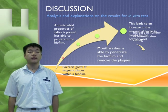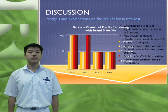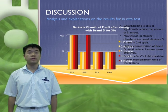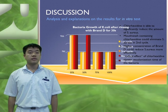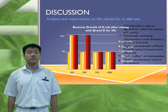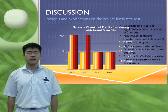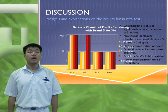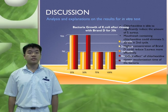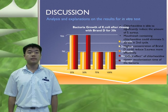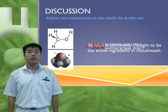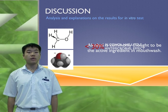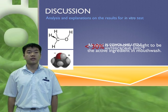Hence, more bacteria are found after rinsing. The results shown in this slide are from brand D and mouthwashes that contain chlorhexidine (CHX). Research has shown that chlorhexidine is able to significantly reduce the amount of S. aureus, and mouthwashes containing chlorhexidine could eliminate S. aureus in the second cycle. It can be seen that higher concentrations of brand D could reduce S. aureus more effectively, due to the residual effect of chlorhexidine, which causes slower recolonization time of bacteria. Bacteria exposed to lower concentrations of CHX might not be eliminated entirely and proliferate when exposed to LB broth. It is mostly thought that alcohol is the main active ingredient in mouthwash; however, it is not. Alcohol below the concentration of 30% has little antimicrobial effect on S. mutans.